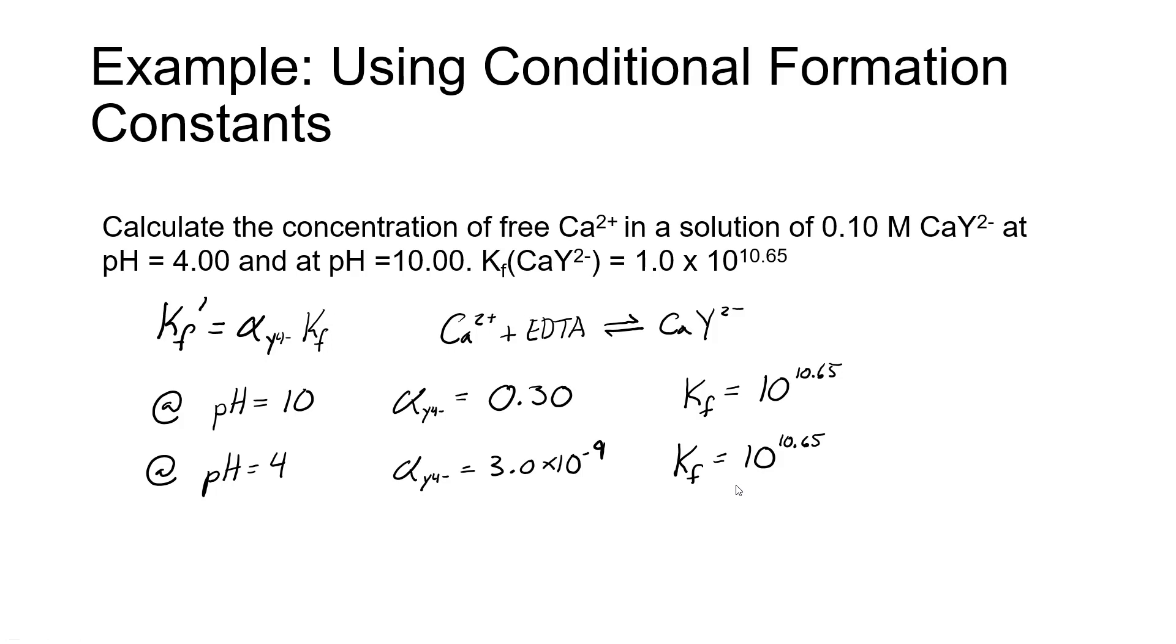We use those two values to calculate the conditional formation constants at each pH. At pH 10, K'f is going to be equal to 0.3 times 10 to the 10.65. If you do the math, that should work out to be 1.34 times 10 to the 10th.